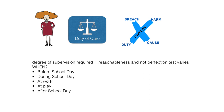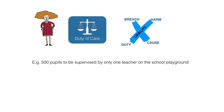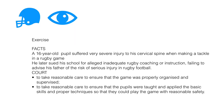The duty of care of teachers normally ceases when the pupils are properly dismissed from the school premises. Allowing 500 pupils to be supervised by only one teacher on the school playground could constitute negligent omission by a school authority to take reasonable steps to protect pupils. Inadequate rugby coaching or instruction, or failing to advise parents of the risks of serious injury in rugby football, could also constitute negligent omission.